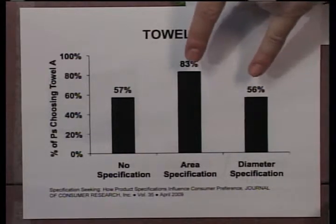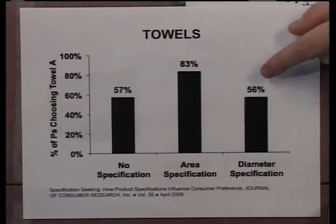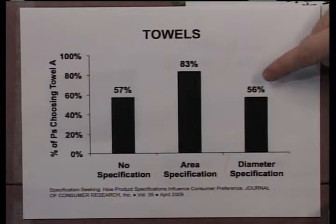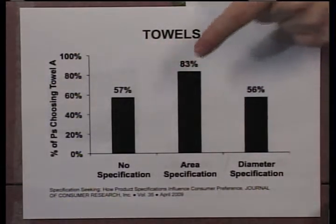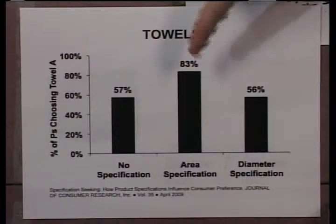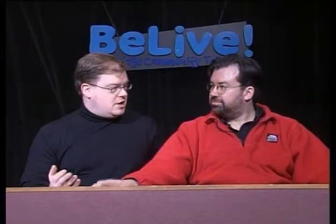The no-specification case is kind of like the control we talked about earlier. The next one — the diameter specification — just looking at that linear dimension — doesn't really adjust people's attitudes about which one they'd pick. But this last one, purely on the basis of the area ratio: you've gotten them to go through this calculation, and they say, wow, this is over two times the area ratio, even though it's only one-and-a-half times the diameter ratio.